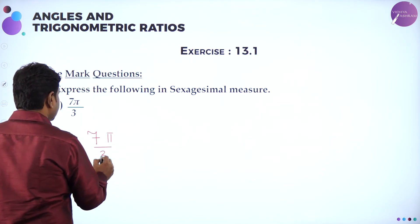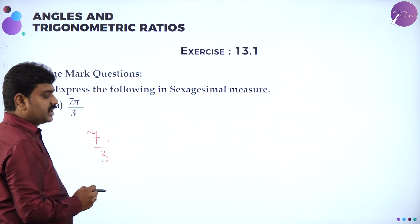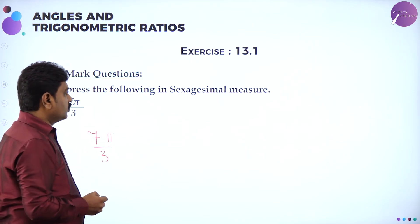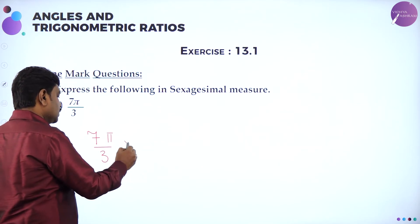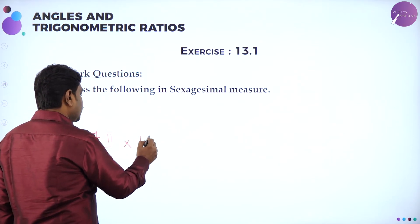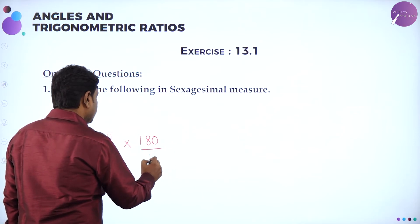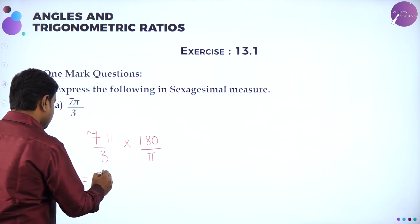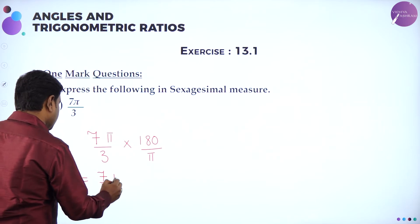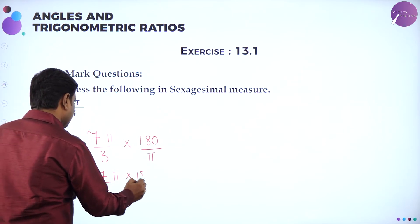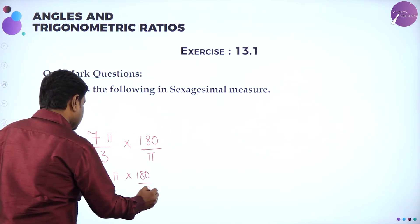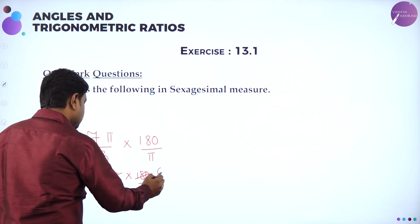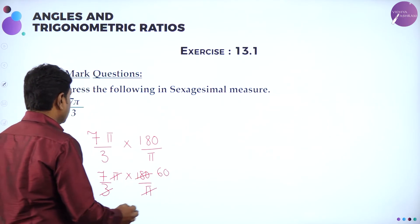7pi/3 is in radians and you need to convert it to degrees. To convert, multiply by 180/pi. So 7pi/3 times 180/pi — pi cancels, and 3 divides into 180 giving 60. So 7 times 60 equals 420 degrees. Therefore 7pi/3 radians equals 420 degrees.